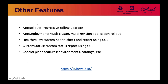There are many other features we don't have enough time to cover in detail. Notably, we have the application rollout object for progressive route upgrades. Also, the app deployment object can do multi-cluster, multi-revision application rollout. There are health policies for health checking and custom status that you can write using CUE. There are also catalogs, environments, and some control plane features. If you're interested, please check out the website.